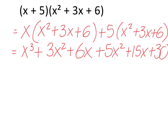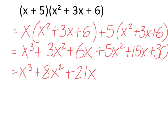Looking for like terms: we have x cubed on its own, then 3x squared and 5x squared which combine to give 8x squared. Then 6x and 15x combine to give plus 21x, and finally plus 30 on its own. There are no more like terms to put together, so x cubed plus 8x squared plus 21x plus 30 is the final answer.